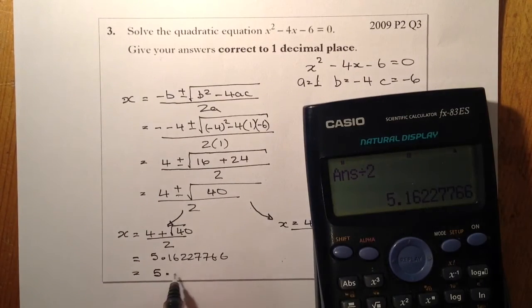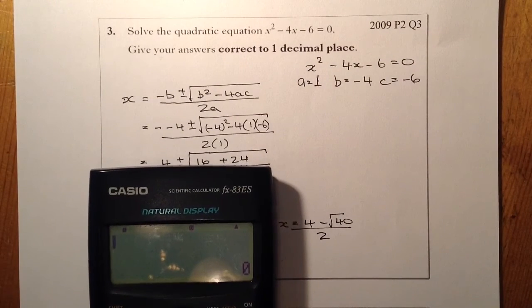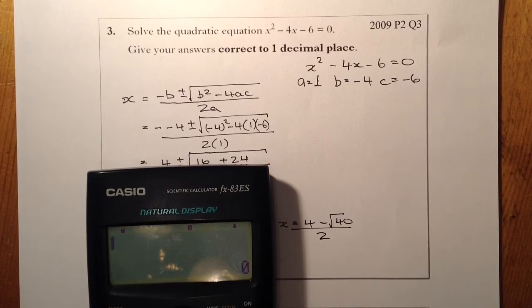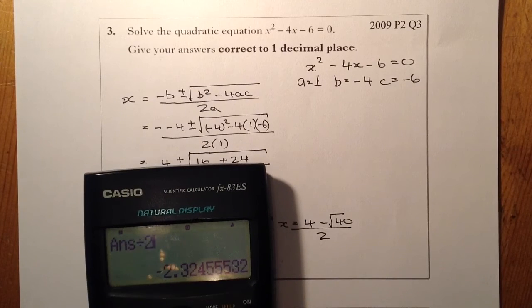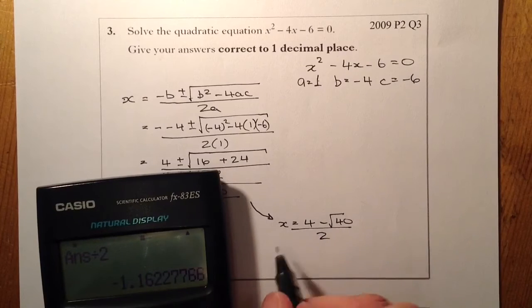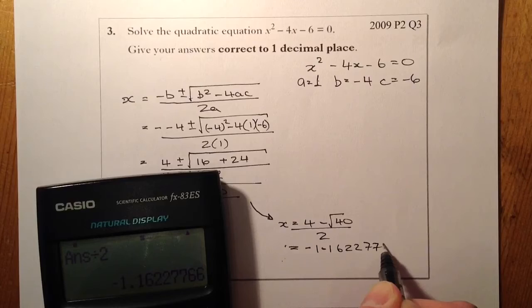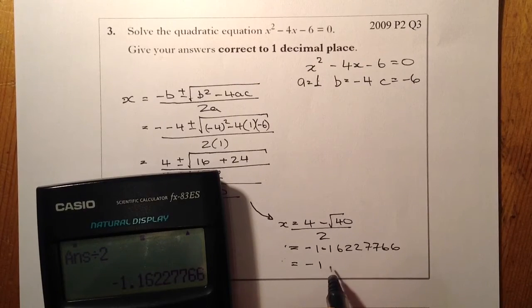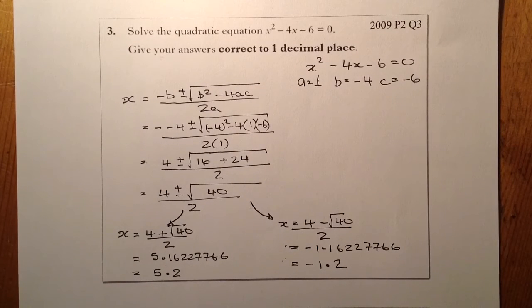On this side I'll do the same thing. On the calculator I'll go for 4 minus root 40, close the bracket, equals gives me minus 2.32, divide that by 2 equals minus 1.16227766, and if I round that to one decimal place that'll be minus 1.2. That's the question completed.